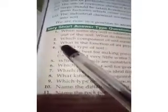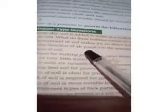Question 3. What is the function of air present in the spaces between the soil particles? The function is to provide oxygen to the plant roots and to the living organisms.